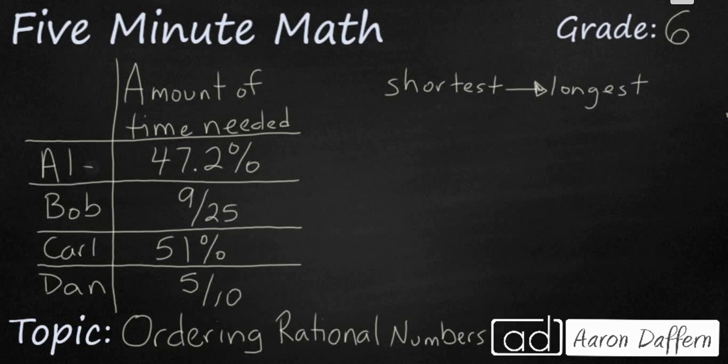Al and Carl, their information is given to us in a percent, whereas Bob and Dan, their information is given to us in a fraction. And one of the keys that we need to remember is when you are ordering things that do not look the same, like fractions and decimals, or maybe percents and fractions, you need like terms. You need to put them all to where they all look the same, like they are all fractions, or they are all decimals, or they are all percents.